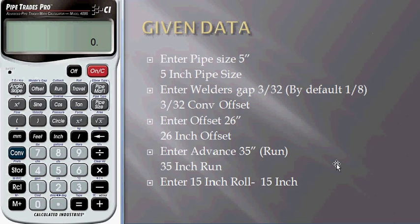First enter pipe size as 5 inch. Press 5, press inch, and press pipe size. Enter welder's gap as 3/32 inch. Press 3 divided by 32, press convert and press offset. The gap will store as 3/32.